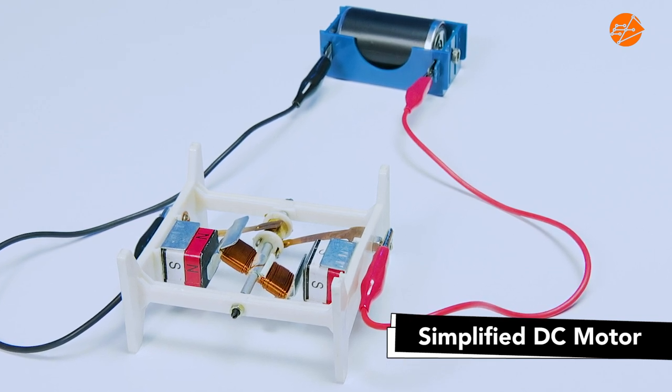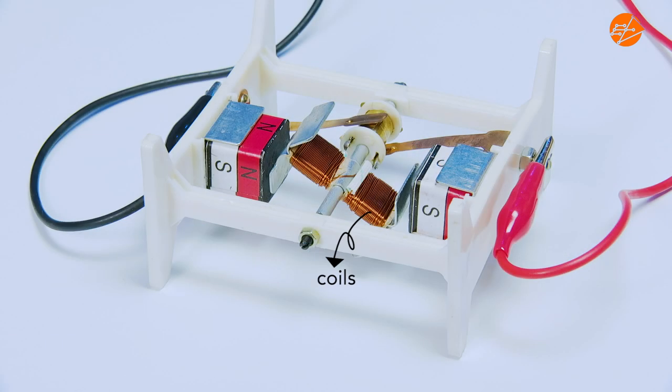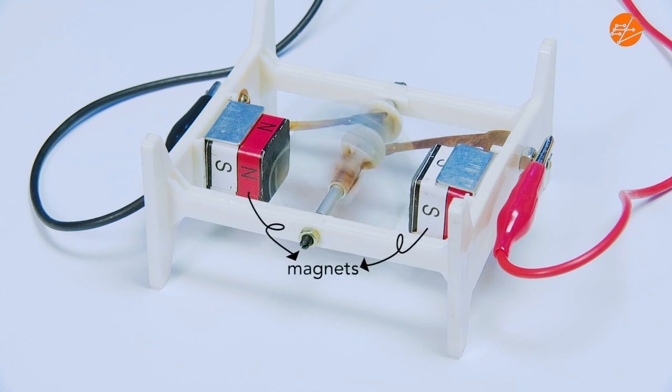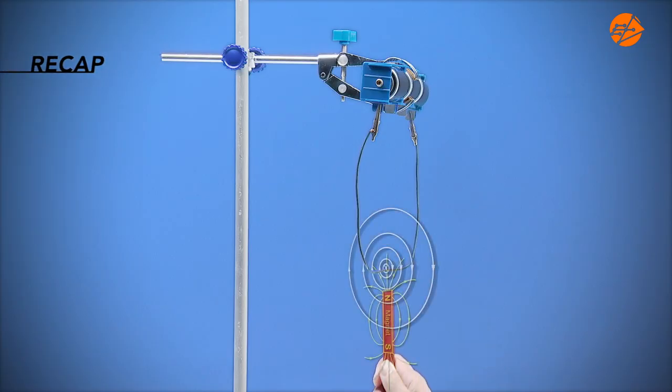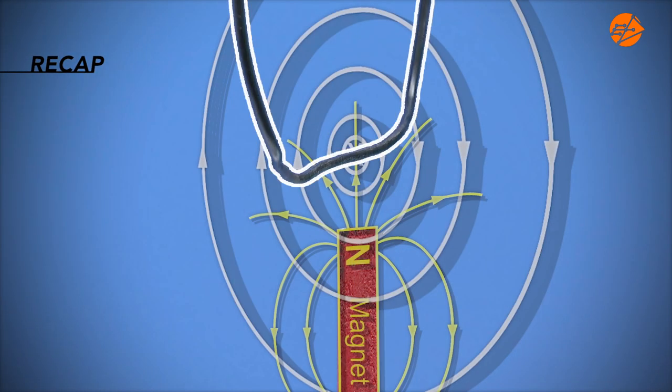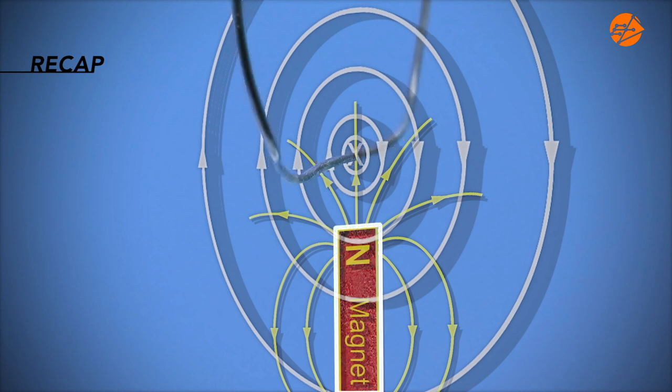As current passes through the conducting coils, in the presence of a magnetic field, we see the turning effect. We have just learnt that the interaction between the magnetic fields of a current carrying conductor and a permanent magnet produces a force on the conductor.